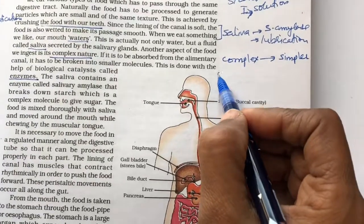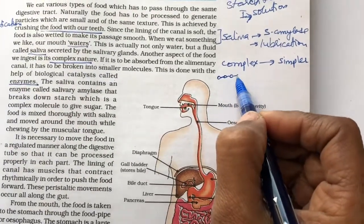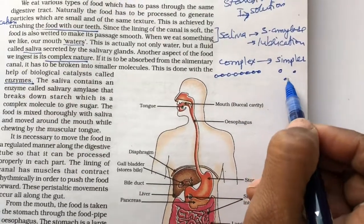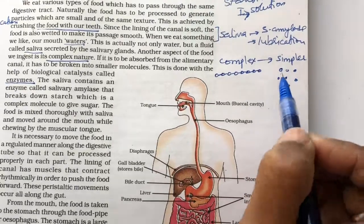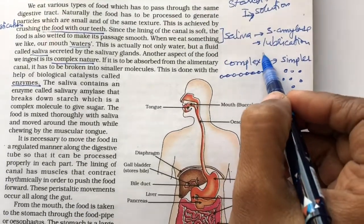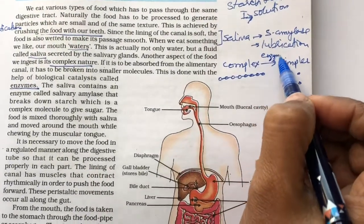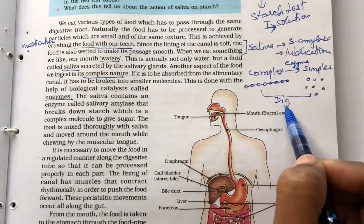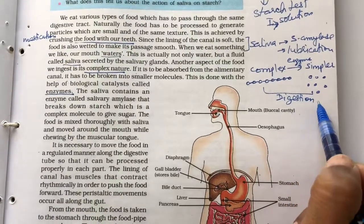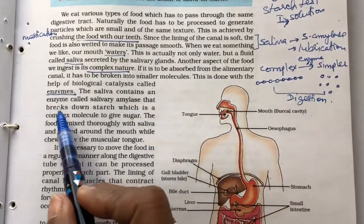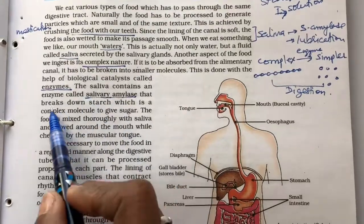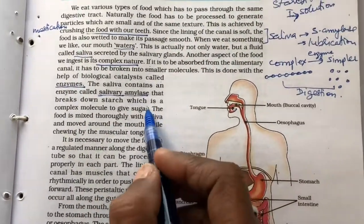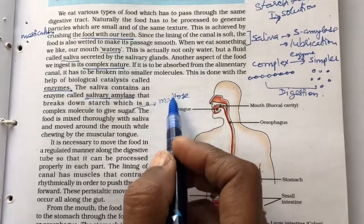Let us see what is the complex food. Complex food means the molecules are in large number and that is all bonded together. But when we say they are simpler, so they are just the bonds are broken and they are in the simpler form. And for this we need some enzymes. These are nothing but the biological catalysts and the process is called digestion. This is what is actually digestion. The saliva contains an enzyme called salivary amylase that breaks down starch which is a complex molecule to give sugars, sugar like maltose, isomaltose.